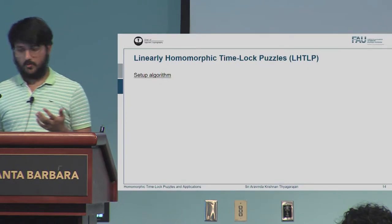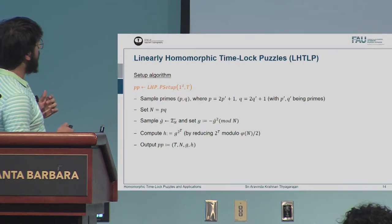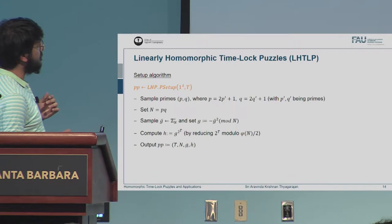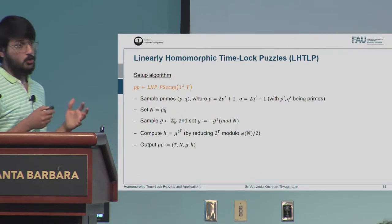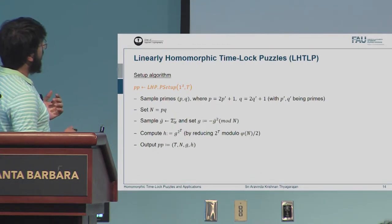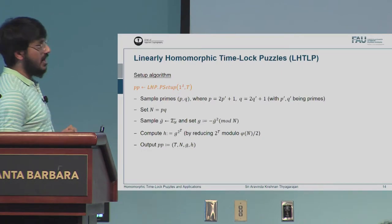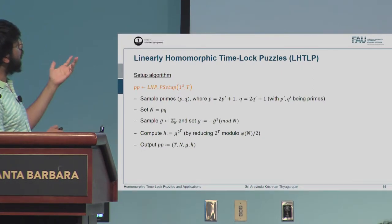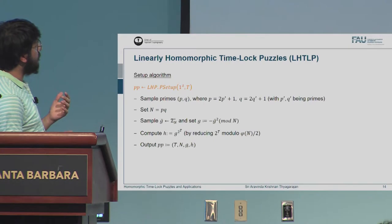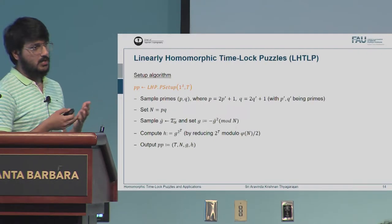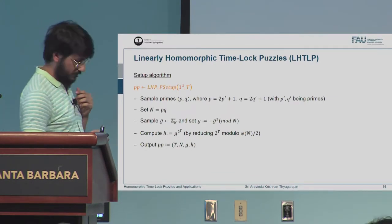Let me go into our linear homomorphic construction, which is fairly simple. The setup algorithm chooses RSA modulus N and generates generator G for the group J_N, which is the set of all elements from Z_N* with Jacobi symbol plus one. It generates H, which we call a partial puzzle. Notice this computation can be sped up because we know the factorization of N, so 2^T can be computed fast and the resultant H can be computed much faster than what it would require to solve. We output the public parameters.